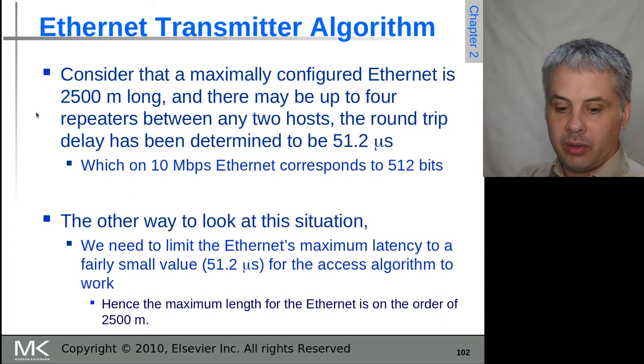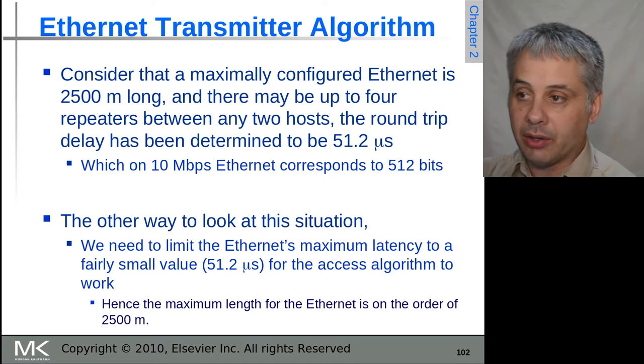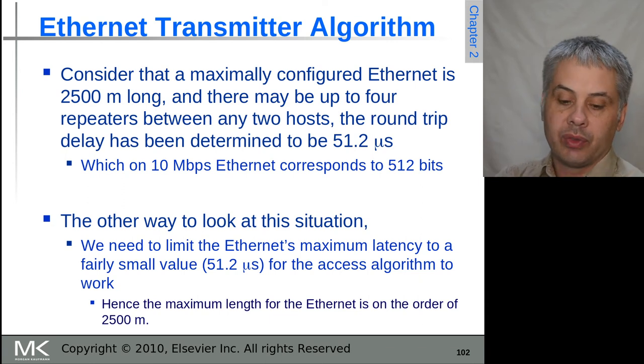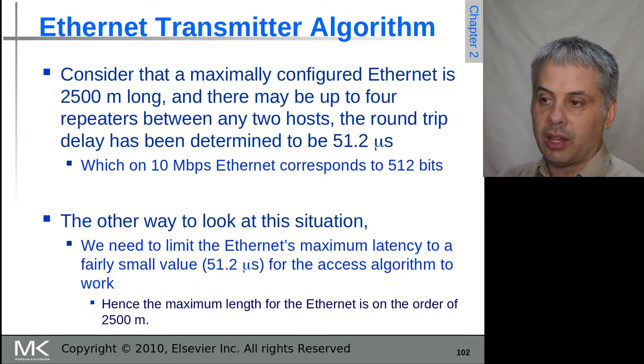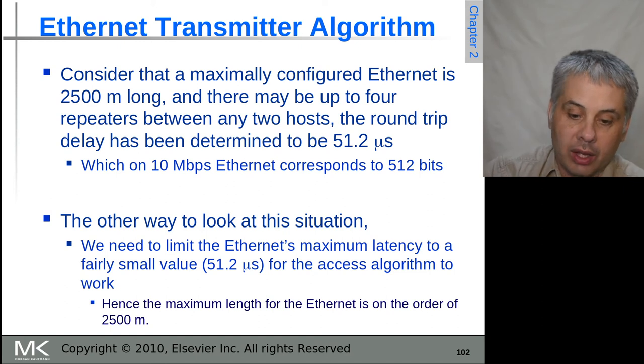If we want to understand the 512 bits: on a 2500 meter long Ethernet with four repeaters, they basically worked out that the round trip delay, the worst round trip delay, could be 51.2 microseconds. So at 10 megabits per second, that's 512 bits. Or you could look at it a different way and say that we want to limit the latency of Ethernet to not more than 51.2 microseconds, and that then means as a result that we can't make an Ethernet longer than about 2500 meters in total length.